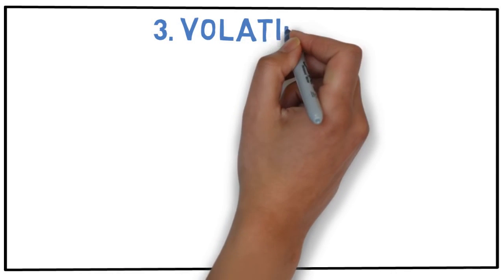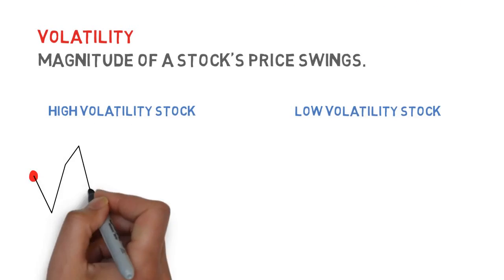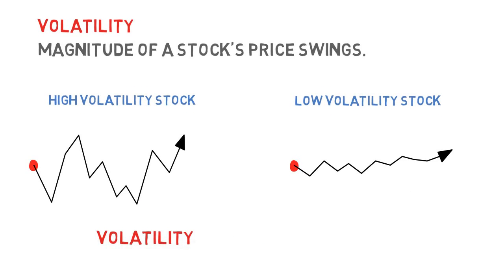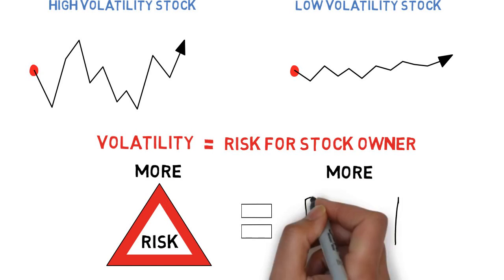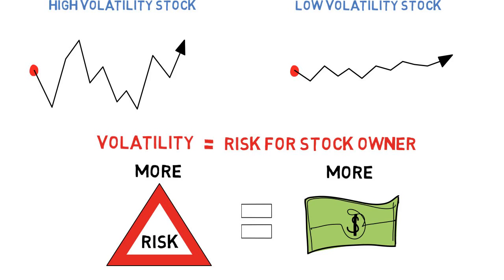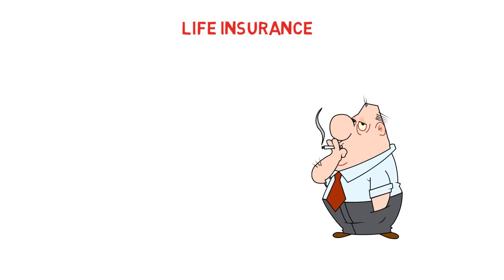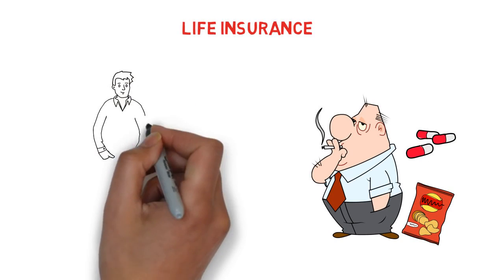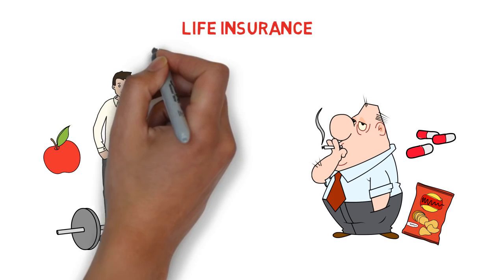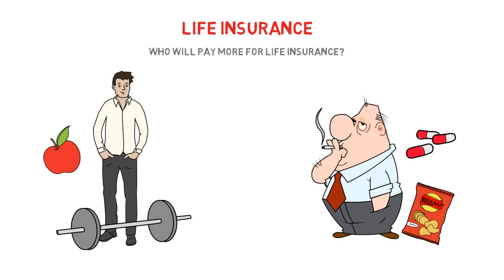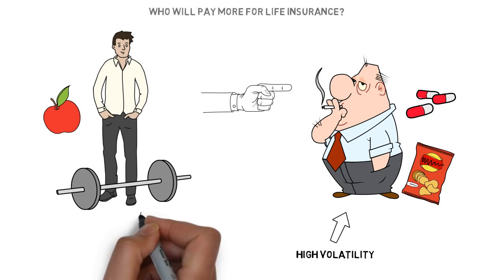The third and final factor that goes into option pricing is volatility — the magnitude of a stock's price swings. Higher volatility means bigger price swings and more risk for the investor. Since there is more risk involved, options will be more expensive. Think of it like life insurance: if you're insuring someone who is overweight, smokes, and has a medical condition versus someone who is healthy and exercises regularly, the higher-risk person pays more. Think of the high-risk person as a stock with high volatility, and the healthy person as a stock with low volatility.